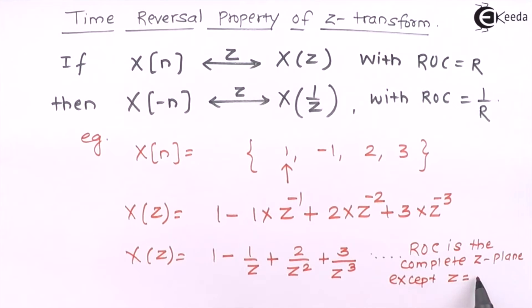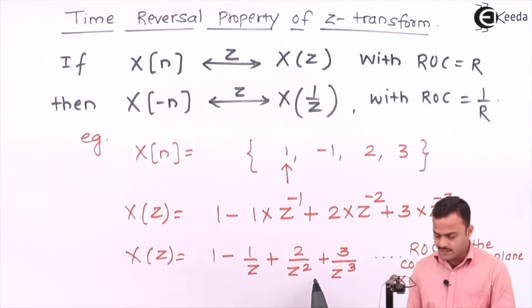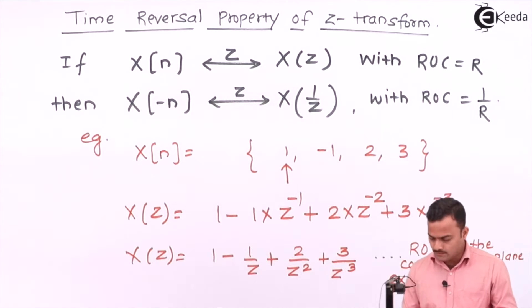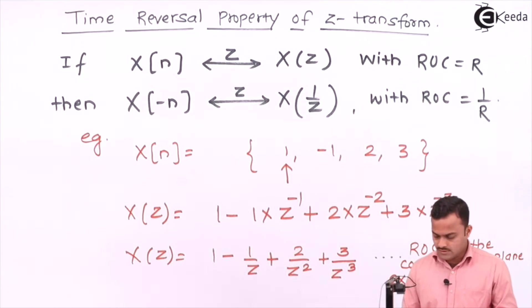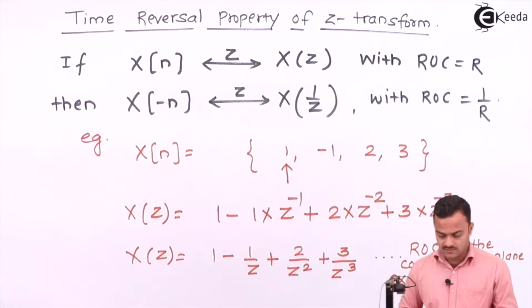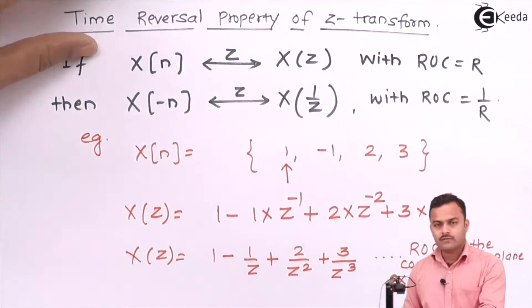For z equal to 0 this expression becomes infinite, so the ROC is the complete z-plane except z equal to 0. Any value of z will work except z equal to 0. Now we will time reverse this signal, so the time reversal of x of n will be x of minus n.